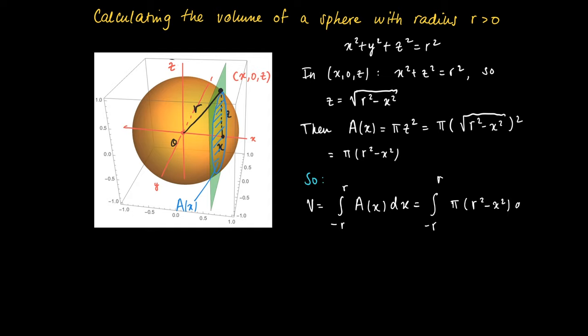This is an easy function in x, so we get the integral of minus r to r of pi times r squared minus x squared dx.